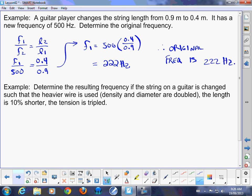Final example here. Determine the resulting frequency if the string on the guitar is changed such that the heavier wire is used, so density and diameter are doubled, and the length is 10% shorter, and then the tension is tripled. So you're doing a whole bunch of stuff here. Here's the neat thing with those relationships I just talked about on this page. They all can be incorporated in.